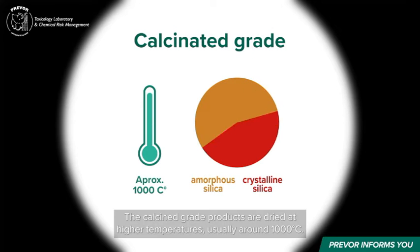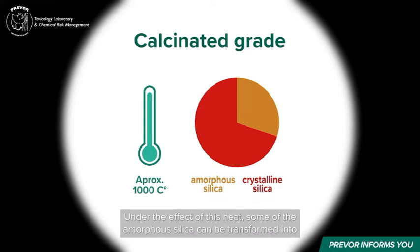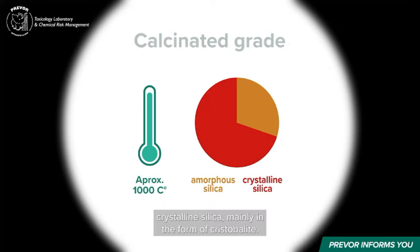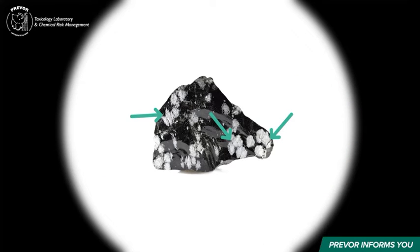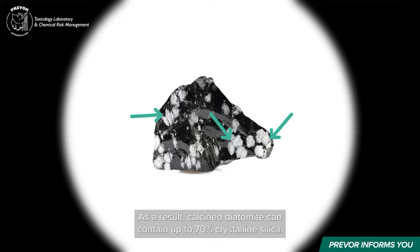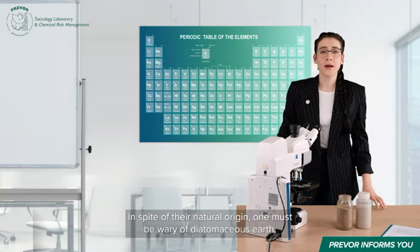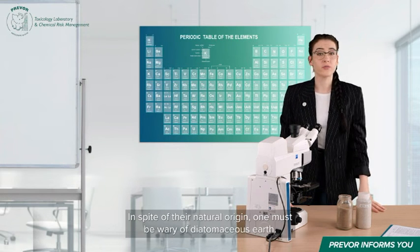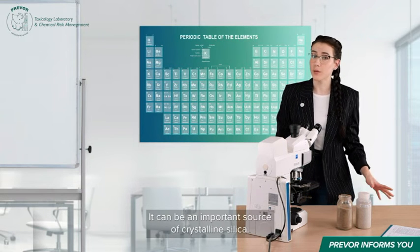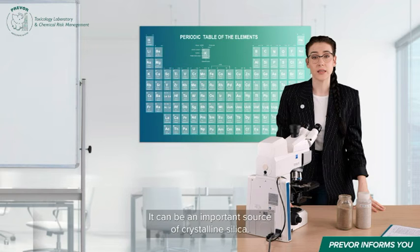The calcinated grade products are dried at higher temperatures, usually around 1000 degrees Celsius. Under the effect of this heat, some of the amorphous silica can be transformed into crystalline silica, mainly in the form of cristobalite. As a result, calcinated diatomite can contain up to 70% crystalline silica. In spite of their natural origin, one must be wary of diatomaceous earth — it can be an important source of crystalline silica.